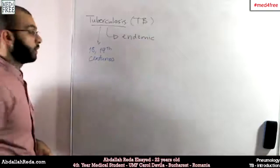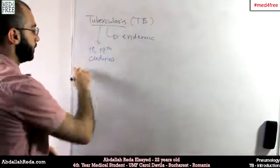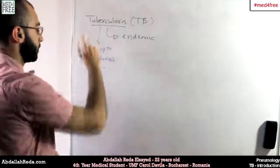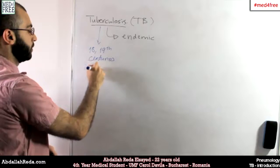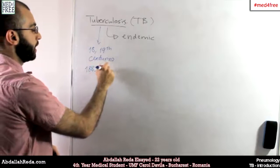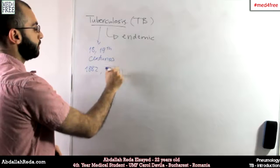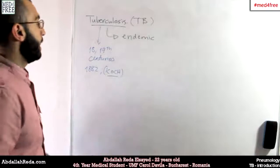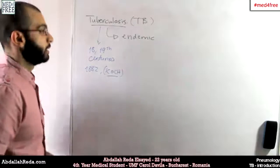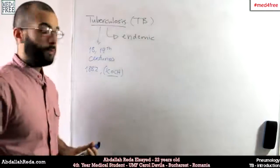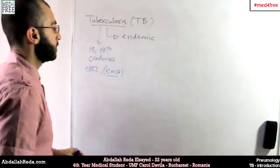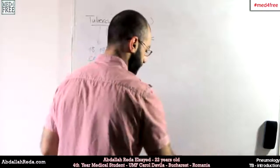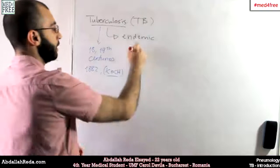This changed with the discovery of the bacterial causes of tuberculosis in 1882 by the German doctor Koch. This is why the bacteria that cause TB are called Koch bacillus or Koch bacilli.